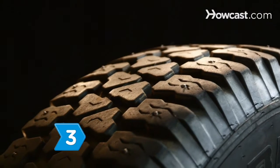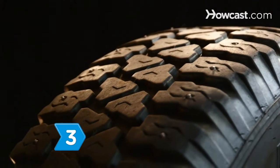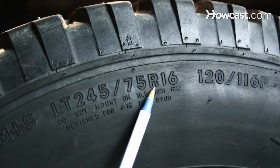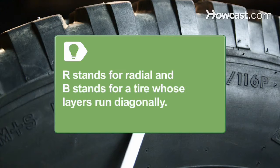Step 3. Consider the letter that follows the pair of slash numbers. It indicates how the tire was constructed. The letter R stands for radial, and B stands for a tire whose layers run diagonally.